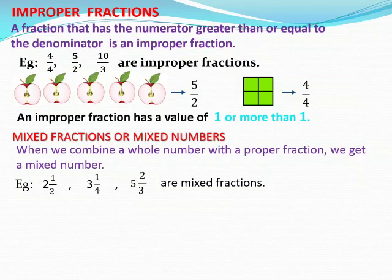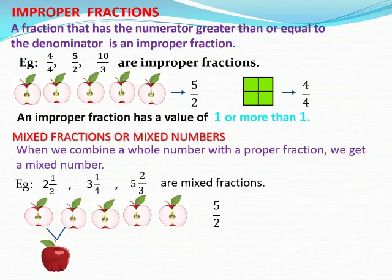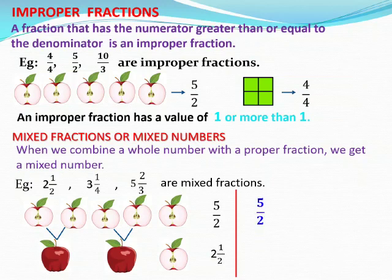Now let us see the same apple example we used for improper fractions. The fraction for this figure is 5 by 2. When we join 2 halves together, we get 1 full apple. Again, join 2 halves and we get another full apple. Now half a part is left. So we can write it as 2 whole and half a piece, that is 2 and 1 by 2. So 5 by 2 is equal to 2 and 1 by 2. Here 5 by 2 is an improper fraction and 2 and 1 by 2 is a mixed number.